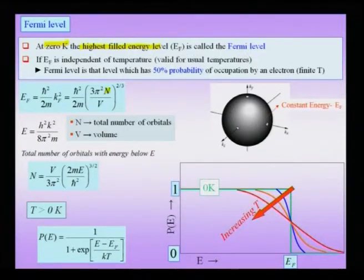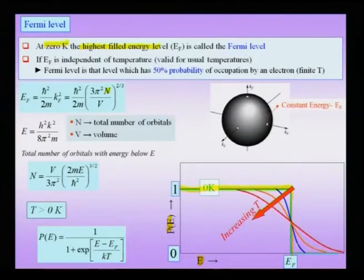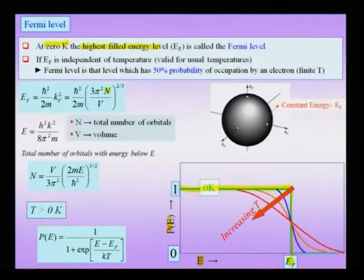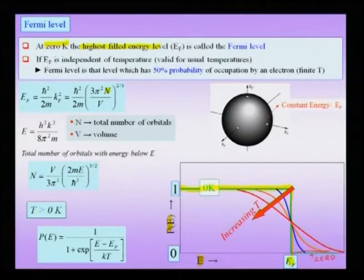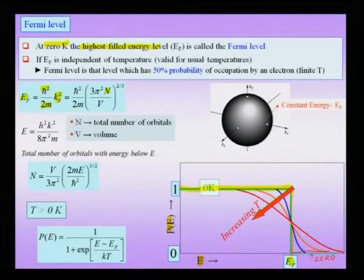If I look at energy versus the probability of finding an electron, at 0 Kelvin the probability of finding an electron is 1 up to the Fermi level — all energy levels are filled. Beyond the Fermi level, no energy levels are filled at 0 Kelvin, so the probability of finding an electron above the Fermi level is 0. The Fermi level can be given by the formula E_F = (ℏ²/2m)·k_F², which is related to n, the total number of orbitals available.